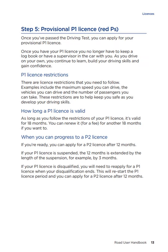Step 5: Provisional P1 Licence. Once you've passed the driving test, you can apply for your provisional P1 licence. Once you have your P1 licence, you no longer have to keep a logbook or have a supervisor in the car with you. As you drive on your own, you continue to learn, build your driving skills and gain confidence. P1 licence restrictions: there are licence restrictions you need to follow, including the maximum speed you can drive, the vehicles you can drive, and the number of passengers you can take. These restrictions are here to help keep you safe as you develop your driving skills.